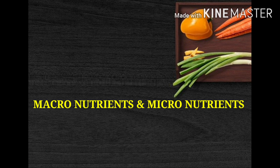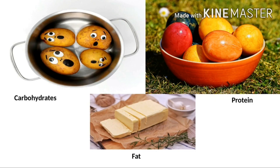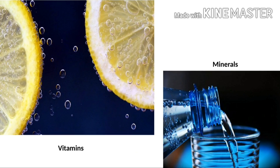These nutrient classes can be categorized as macronutrients and micronutrients. As the name suggests, one is needed in a relatively larger amount than the other. Macronutrients provide structural material — for example, amino acids from which proteins are built, and lipids from which cell membranes and some signaling molecules are built. Micronutrients do not provide energy but are required for proper growth and maintenance of the body. Carbohydrates, proteins, and fats make up the macronutrients, whereas vitamins and minerals make up the micronutrients.